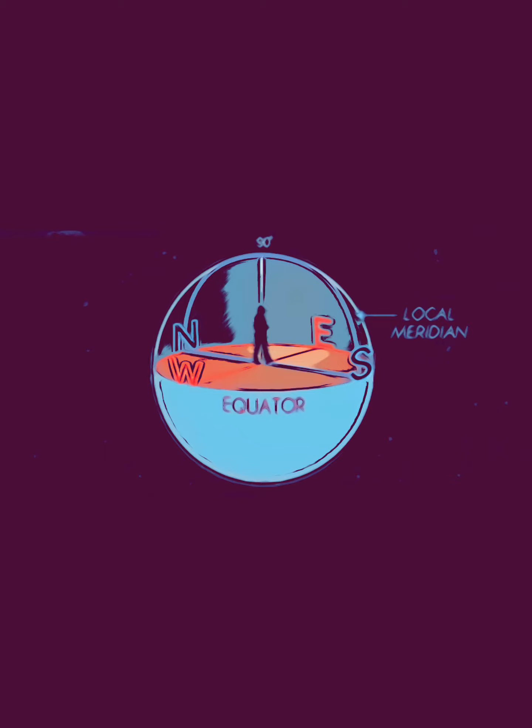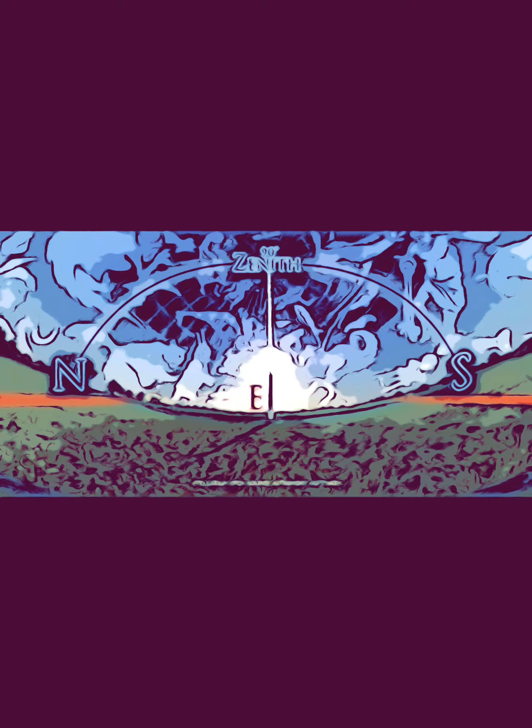We have a local meridian here. If you walked out, looked exactly south and north, then to the zenith overhead—90 degrees up from a flat horizon—we've struck an arc from the south point.